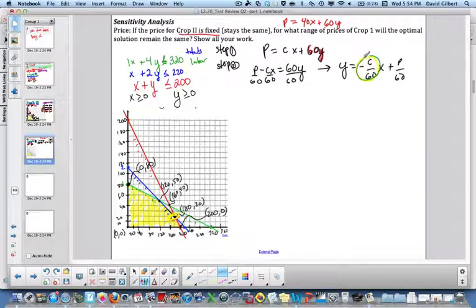Now that slope must be between—this is step 3 I wrote in class—that slope must be between the slopes of the lines where the best point is, where those constraints meet. So it's the constraints, the red and the blue, that meet at our optimal point. I need to find the slopes of each of these lines.